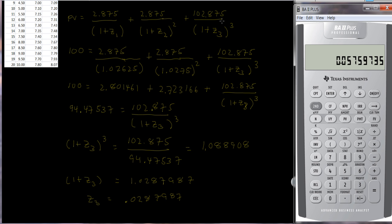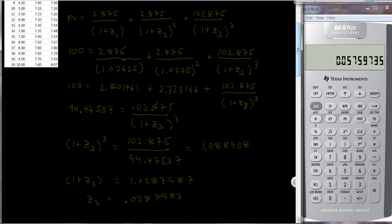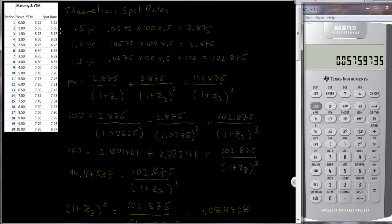Scrolling back up, you can see that the calculated theoretical spot rate is 5.76% — which matches the table. To do the fourth-period one, we would do exactly the same thing. The cash flow would be $3 each period.